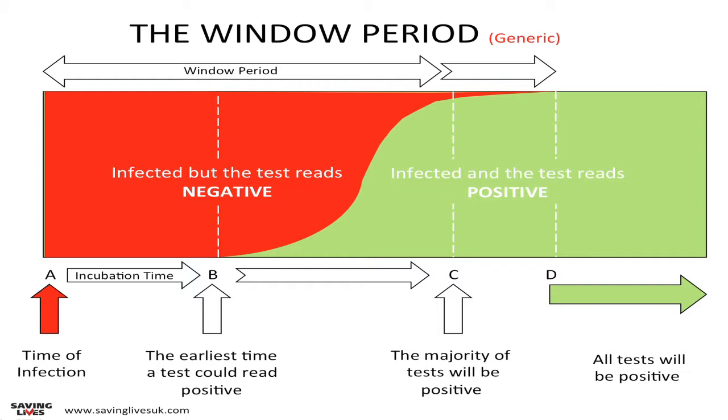Point A is the time of infection. Point B is the earliest time a test could be positive. The time between A and B is the incubation time. Point C is where the majority of tests will be positive. Point D is the point in time from when all the tests will be positive. Therefore, between A and D is the window period.